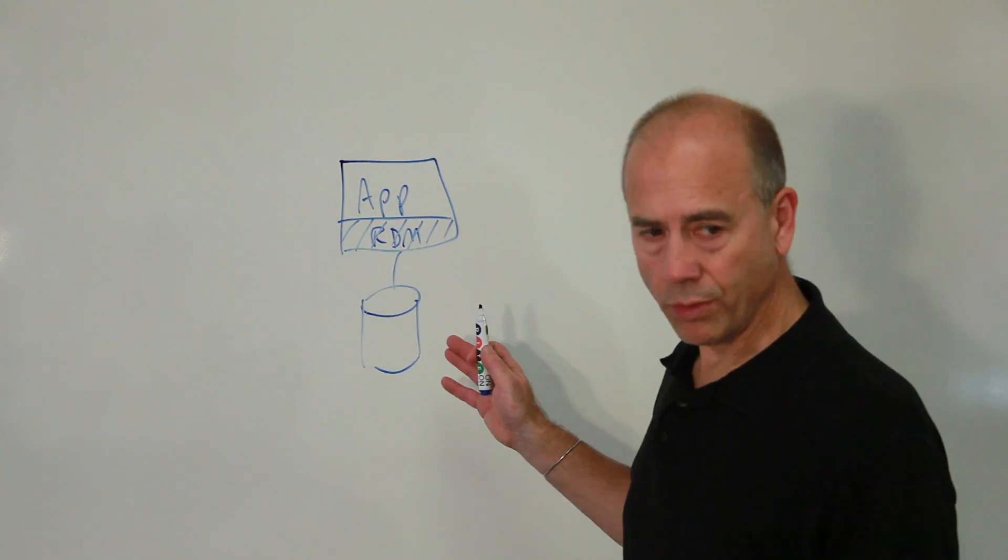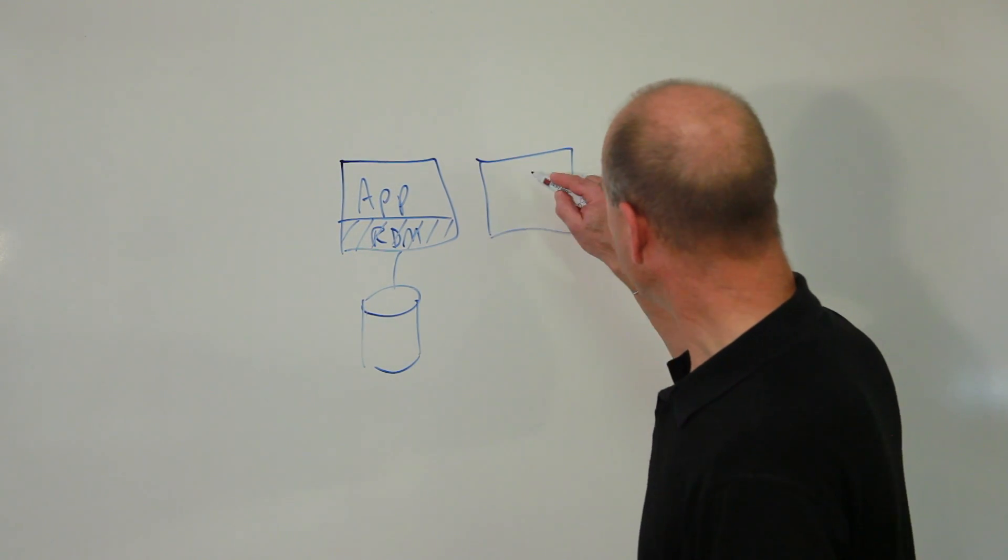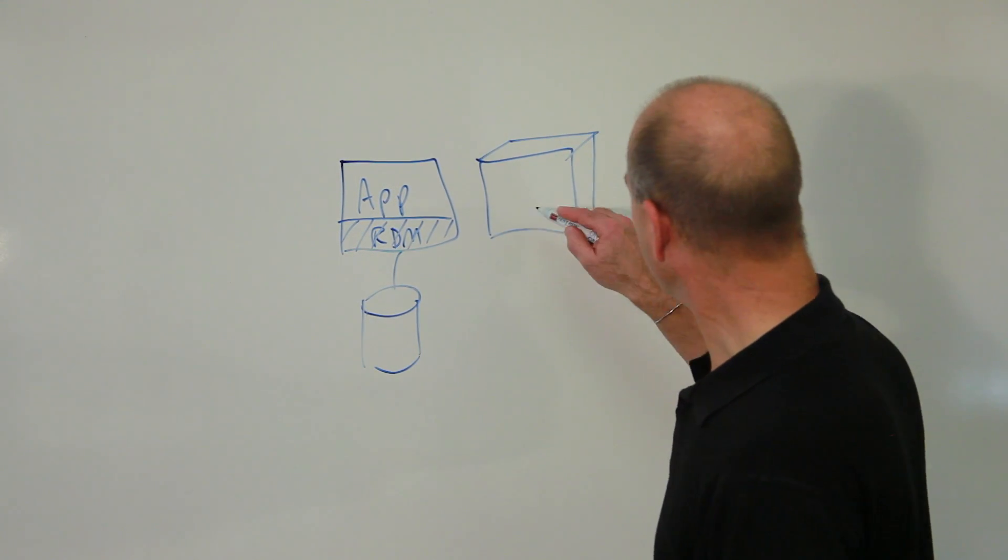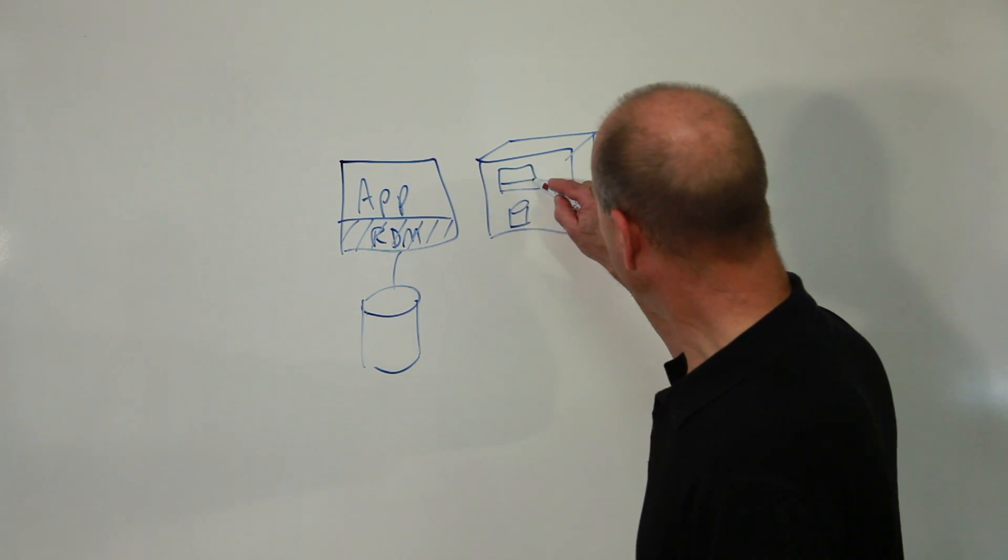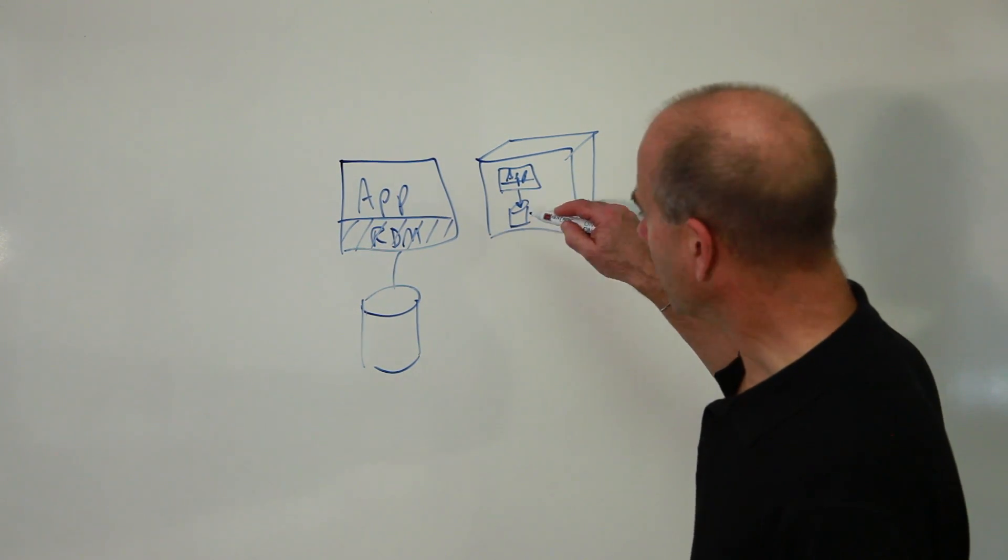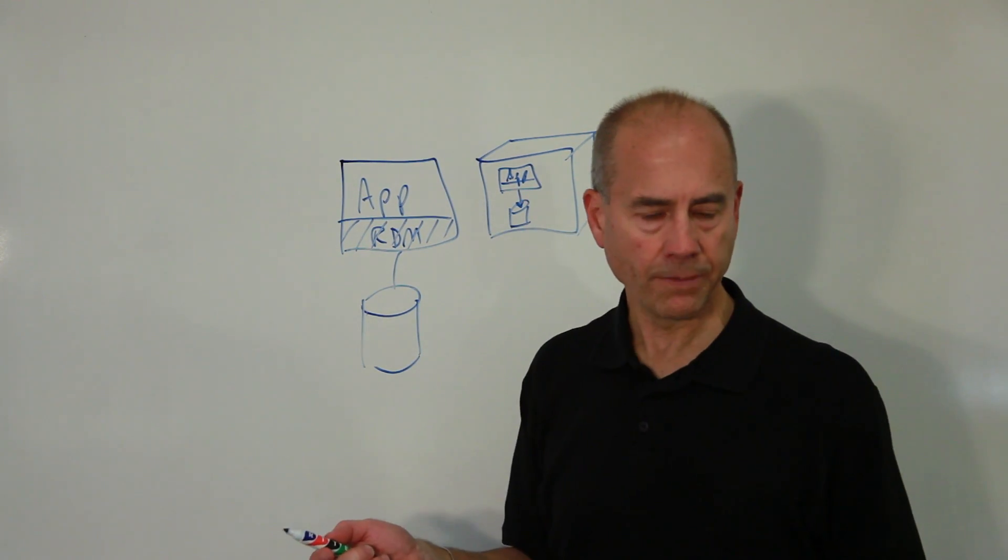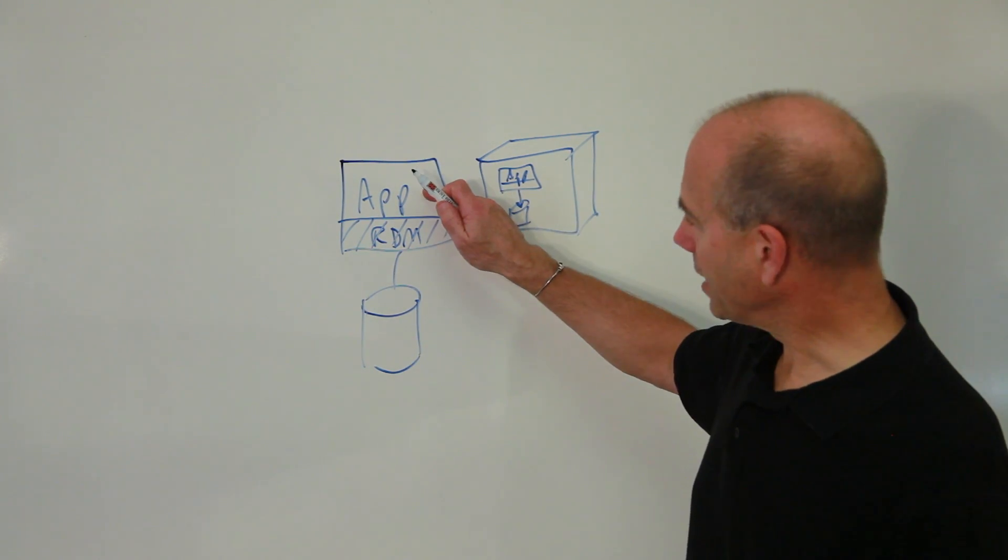That's what we've always called an embedded database. The second definition would be a database that is running on an embedded computer. Same configuration here, where you have an application accessing a database through our runtime. This is what we call deeply embedded, where this is simply embedded.